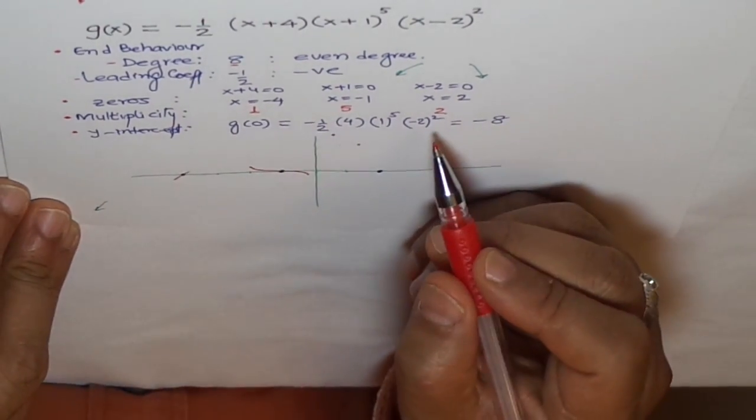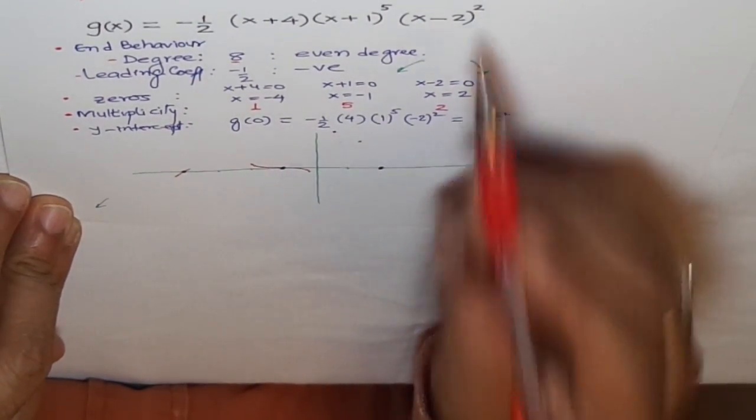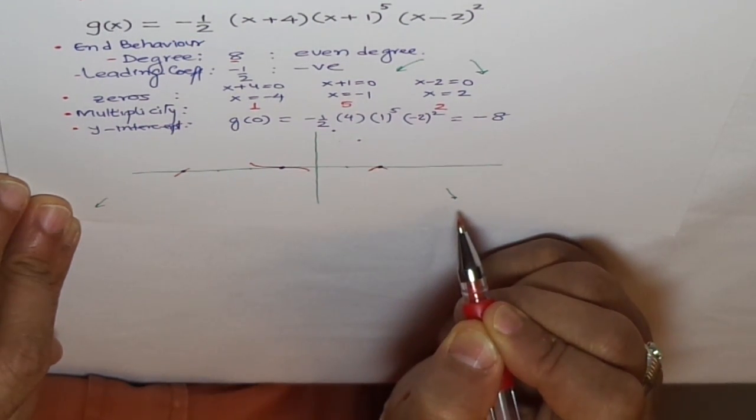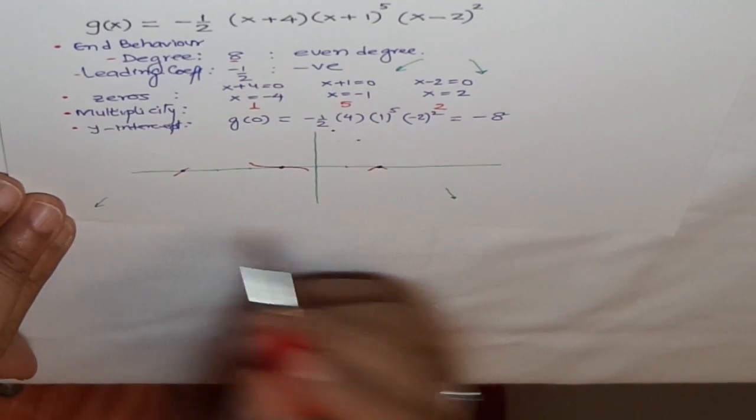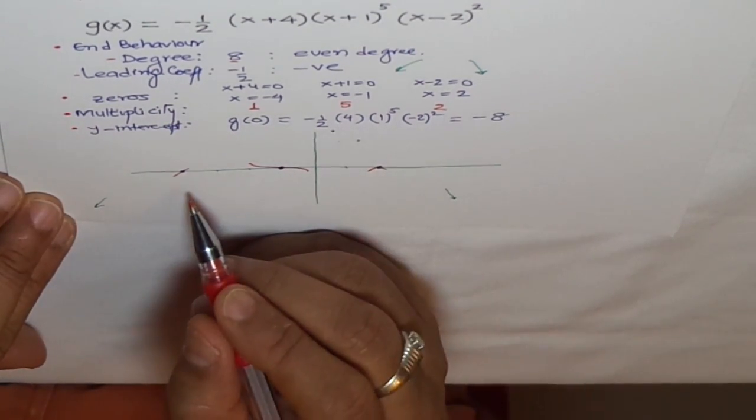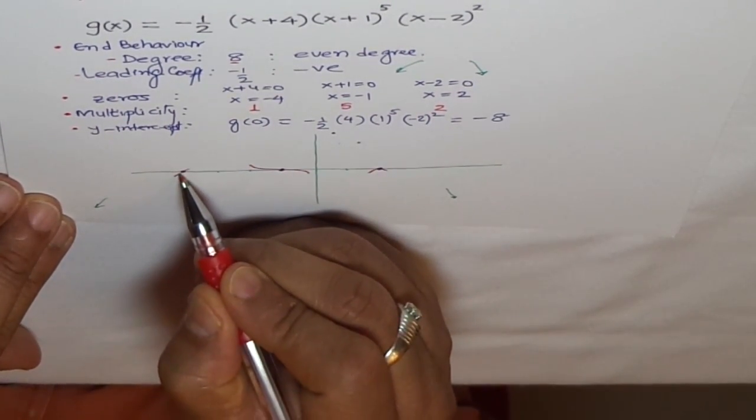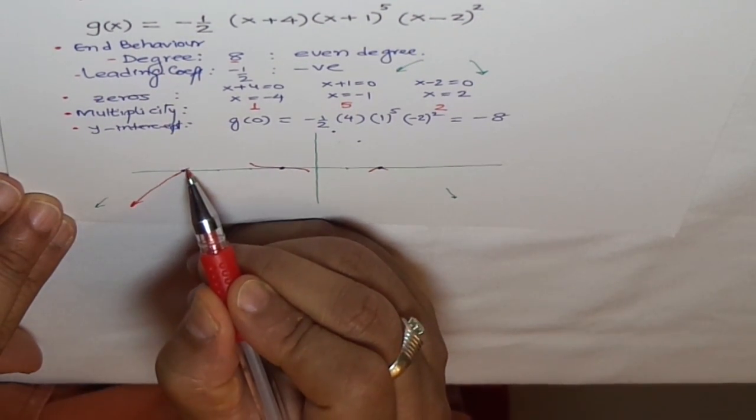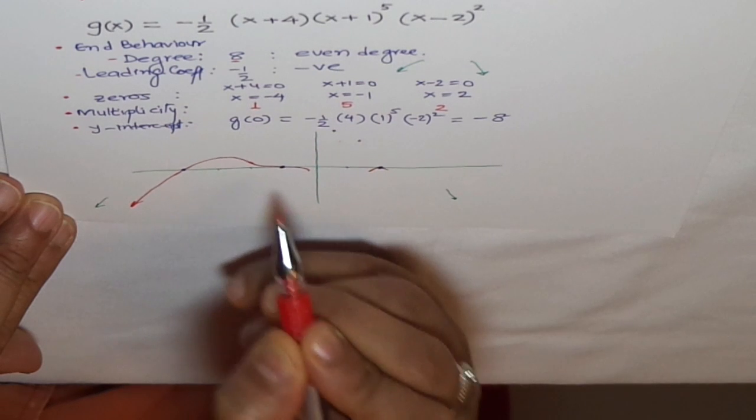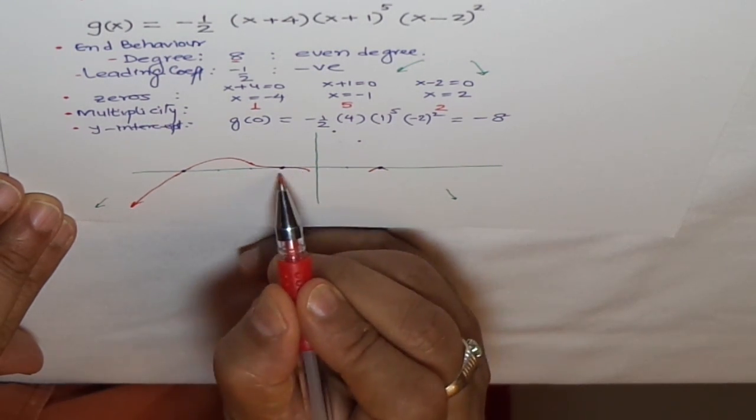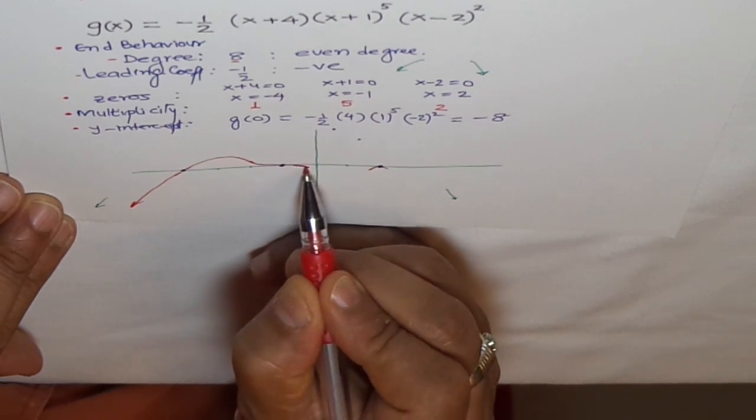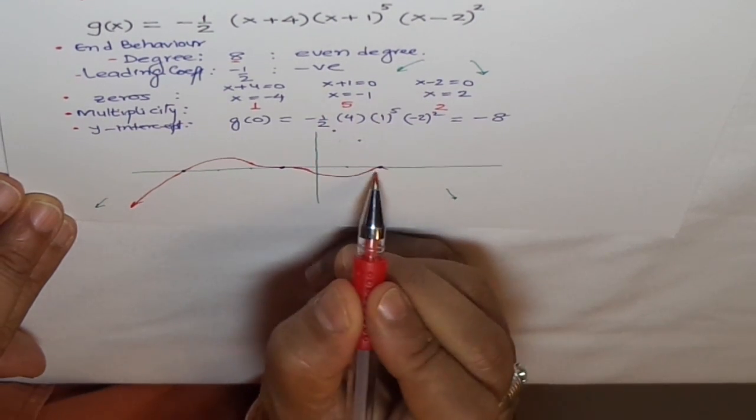At 2, we have a zero which is of 2 multiplicity, so this will bounce back. And when it bounces back, we'll get back to this stage. End behavior is perfectly matching with our zero structure. Now just join these lines. So this is our polynomial.